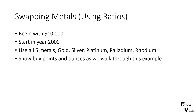So ratio investing — this is what I'm doing for this example. We're swapping metals. We begin with $10,000. I start in the year 2000. We can use all five metals: that's gold, silver, platinum, palladium, and rhodium. I'm going to show the buy points and the swap points and the ounces as we walk through this example.